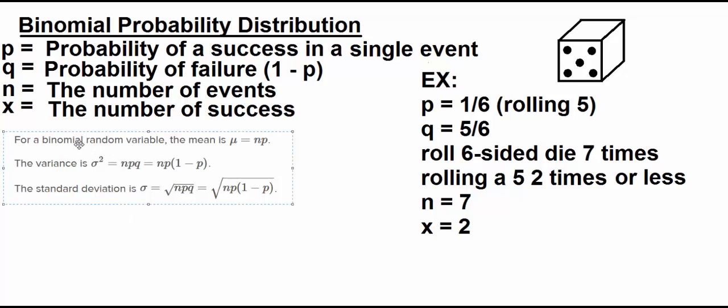So for a binomial random variable the mean μ is always n times p. So n is the number of events, p is the probability.